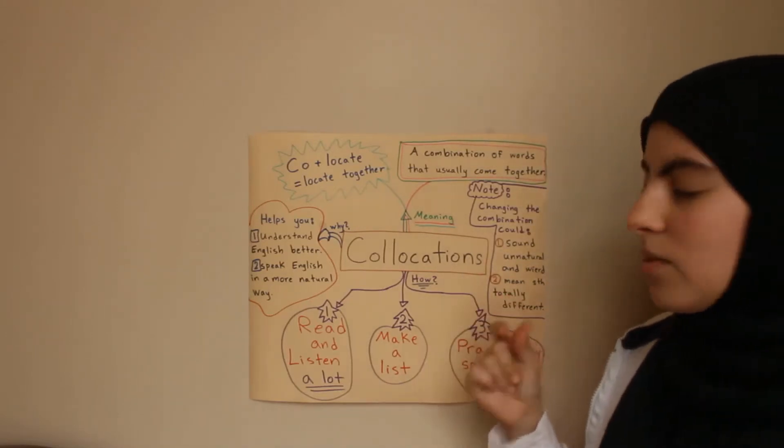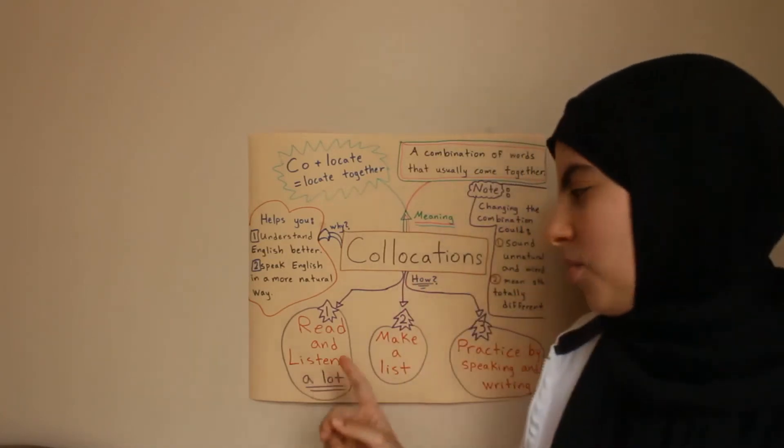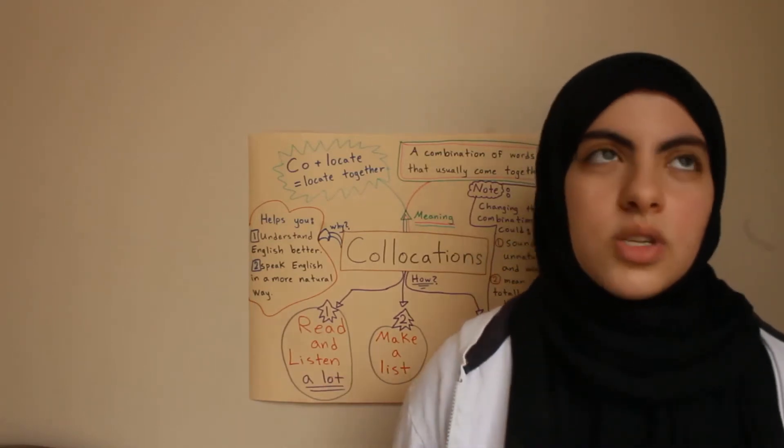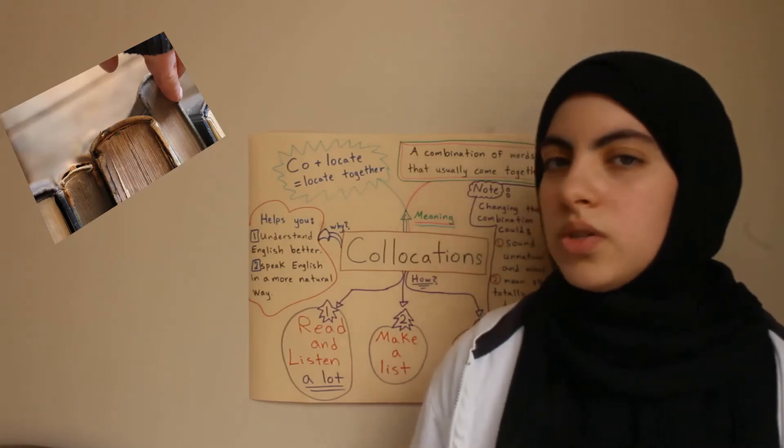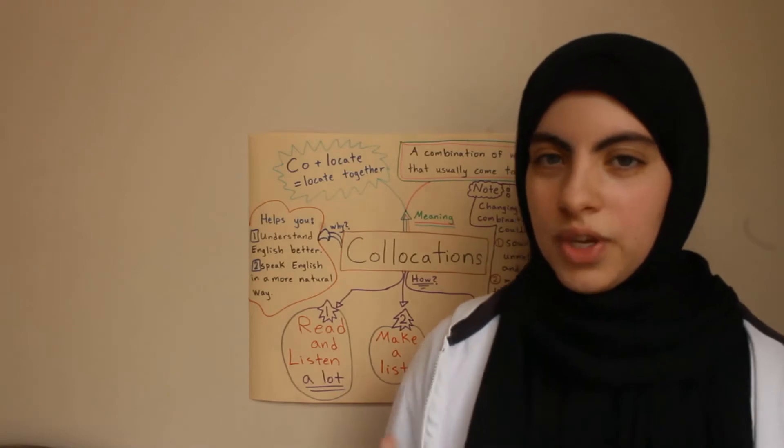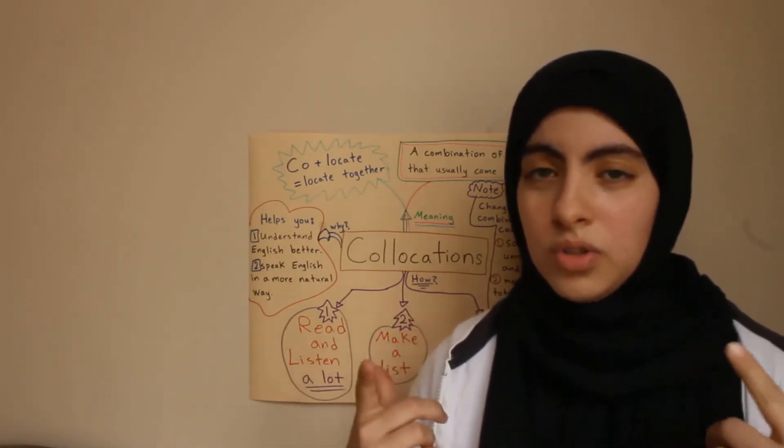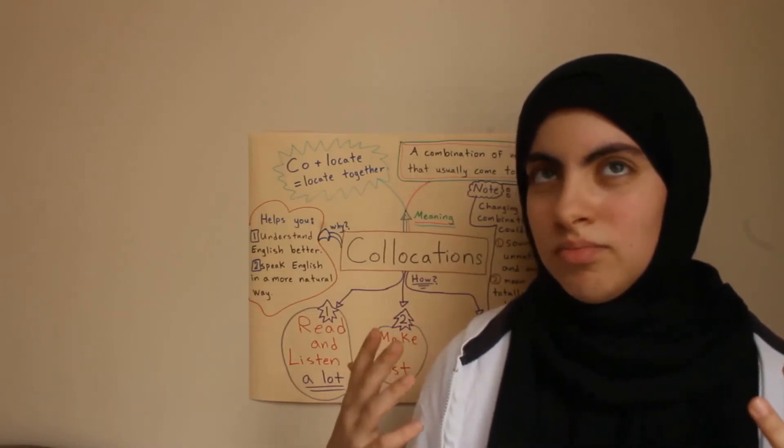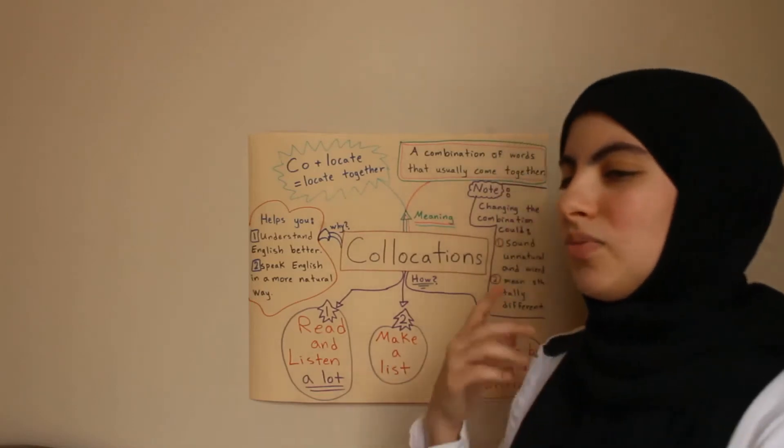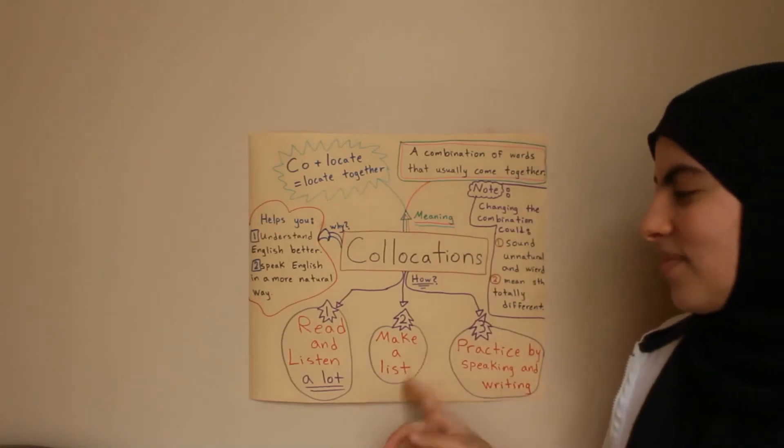Okay, what happened now? Oh, okay. So, how do you learn collocations? There are three important ways. First thing, read and listen a lot. Listen to songs, read stories, watch movies, just immerse yourself in English environment, so you're going to naturally and unconsciously catch up with all the collocations you hear. You're going to catch them, and you're going to feel good about it.